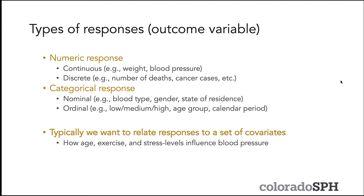Categorical responses, on the other hand, are non-numeric. These are categories, and they can be nominal — for example, blood type, where you can have blood type A, blood type B, or gender (male versus female) — or they can be ordinal, which are categorical responses that have some natural ordering to them, like low, medium, high. Age group is another example.